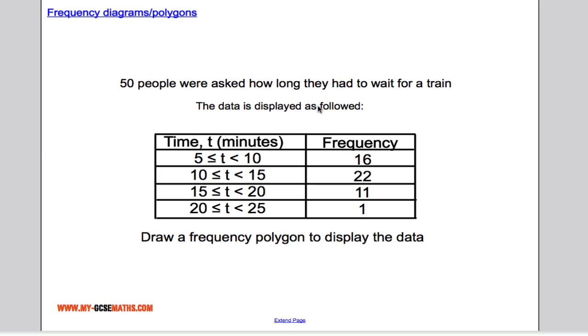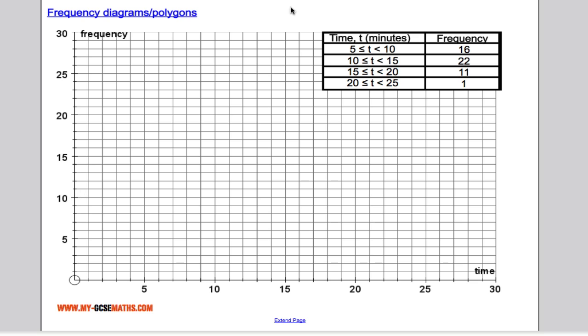We had the 50 people waiting for a train and there's our frequency table. We're asked to draw a frequency polygon. So we'll go to our graph and I want the midpoint of each class interval. The midpoint of this class interval is going to be 7.5. So 7.5 is here and it's going to be 16 in frequency. Frequency always goes on this axis. I'll put a little cross there.